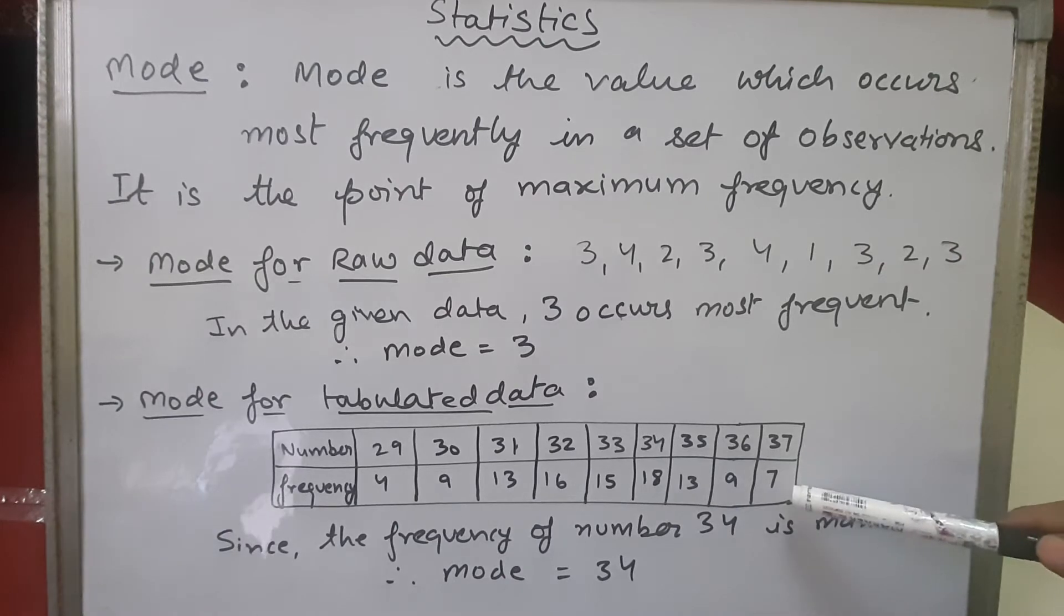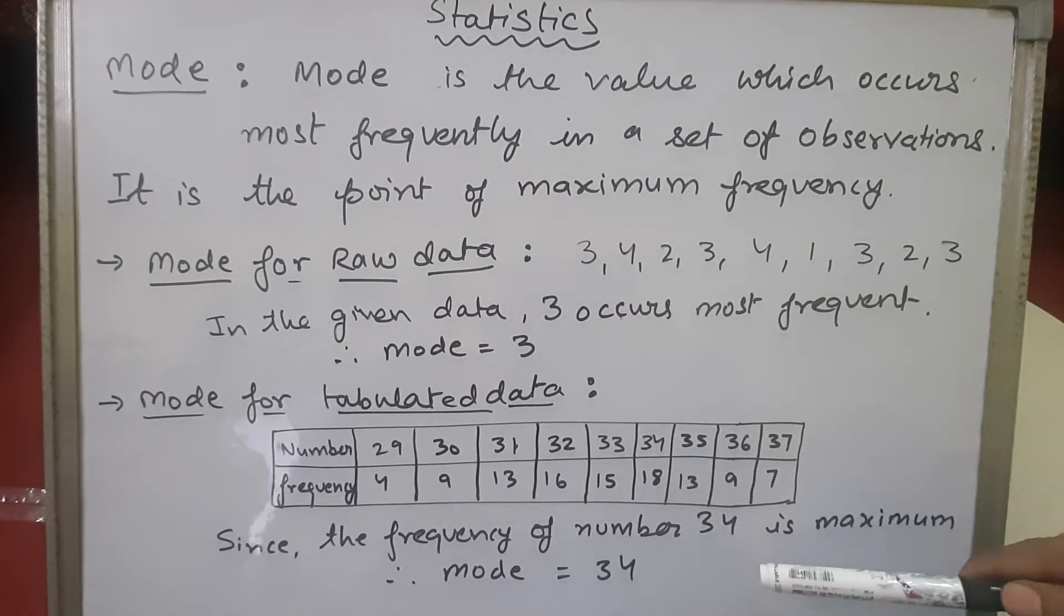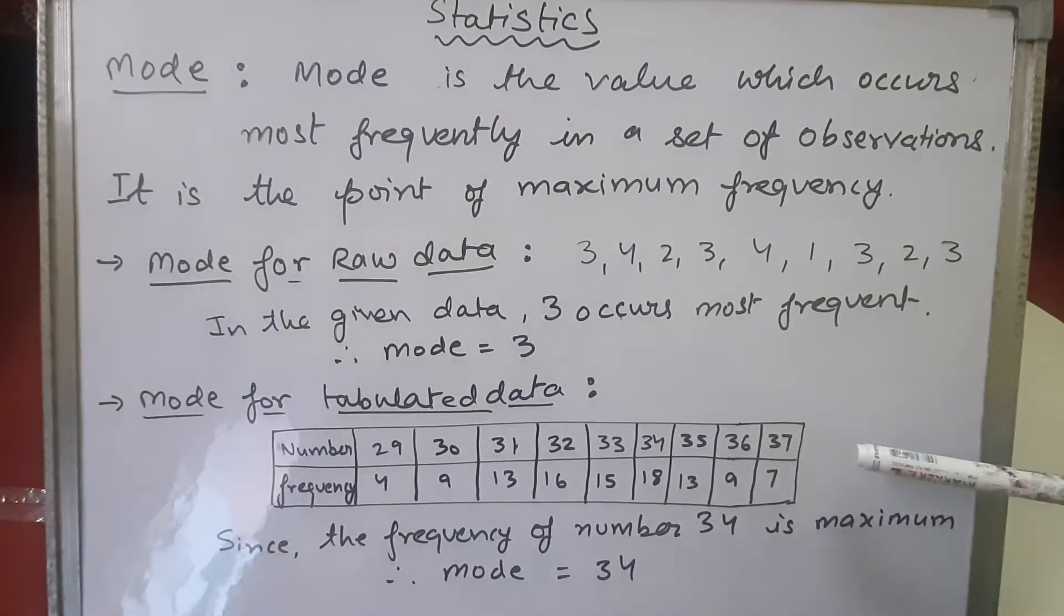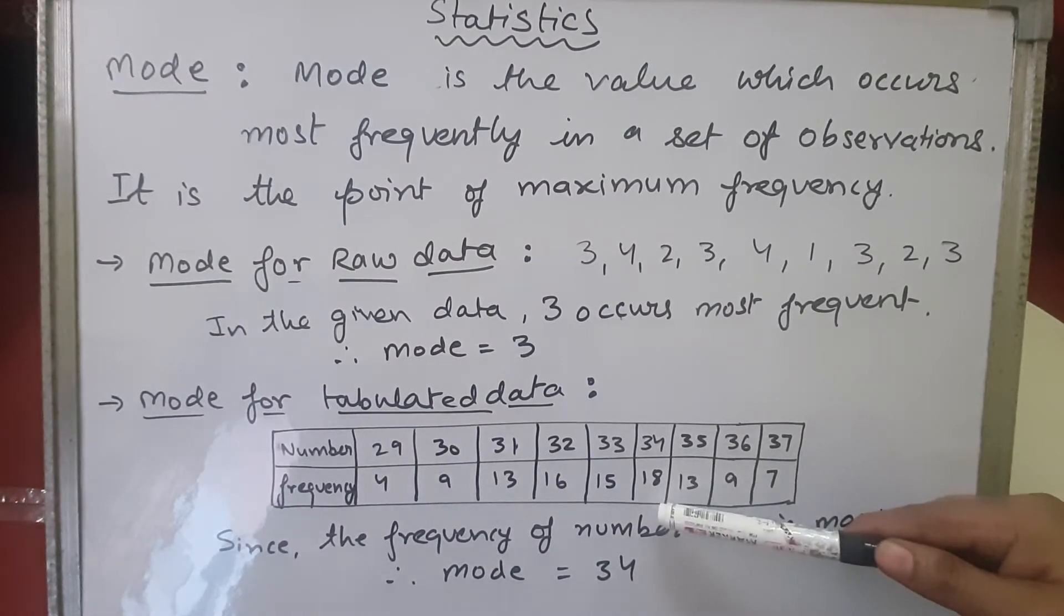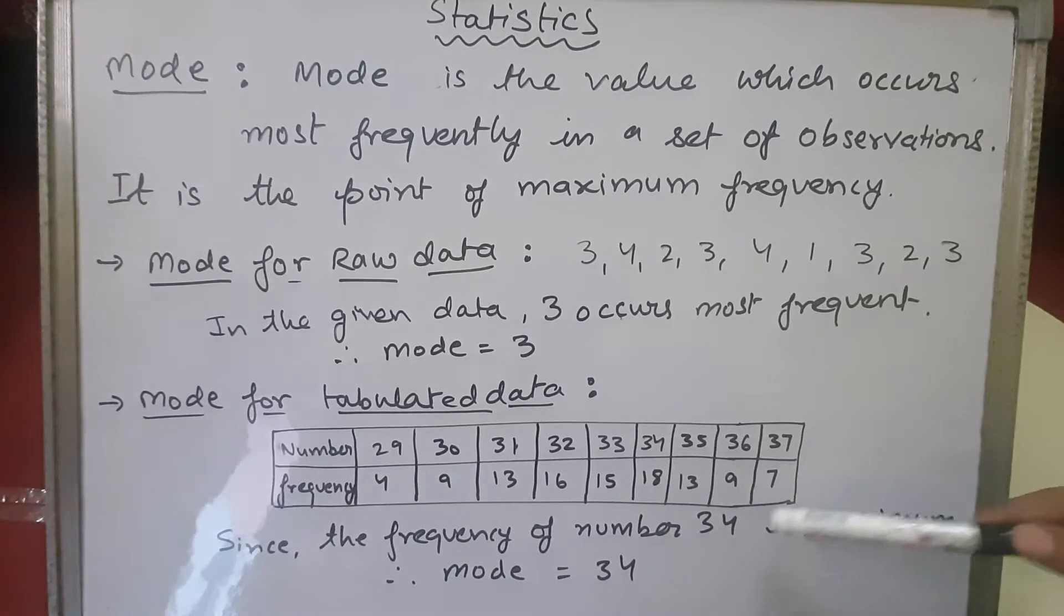36 is 9, 37 is 7. You can see here that in this given table, the frequency of the number 34 is 18, which is maximum. It's the maximum frequency, so we can say that the frequency of number 34 is maximum.